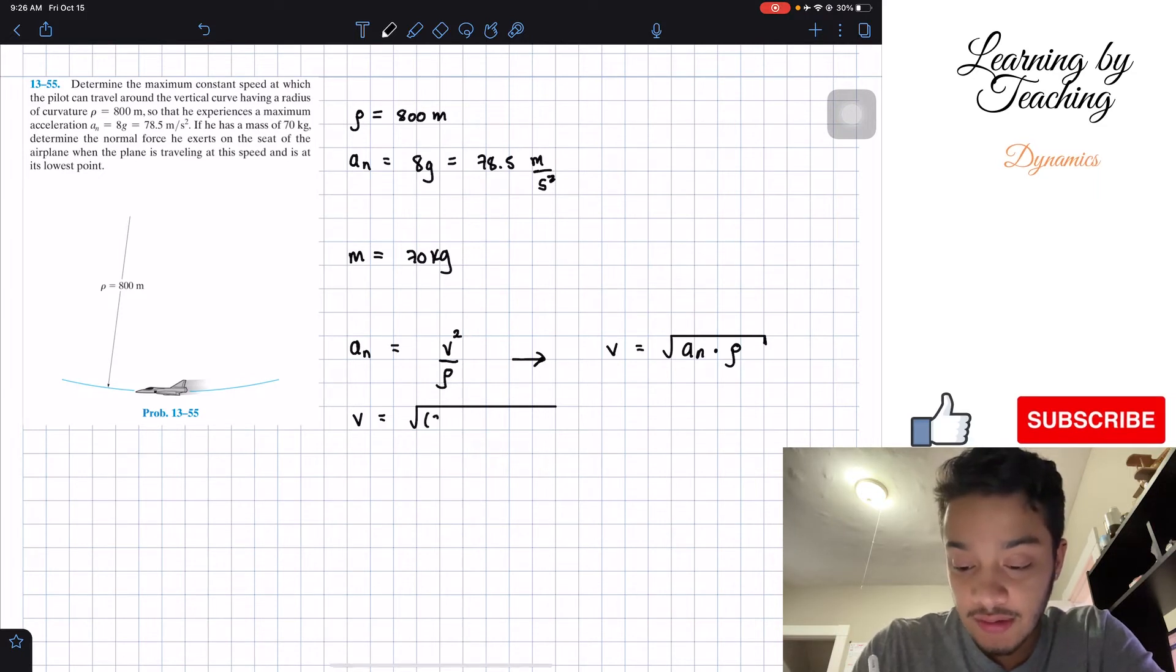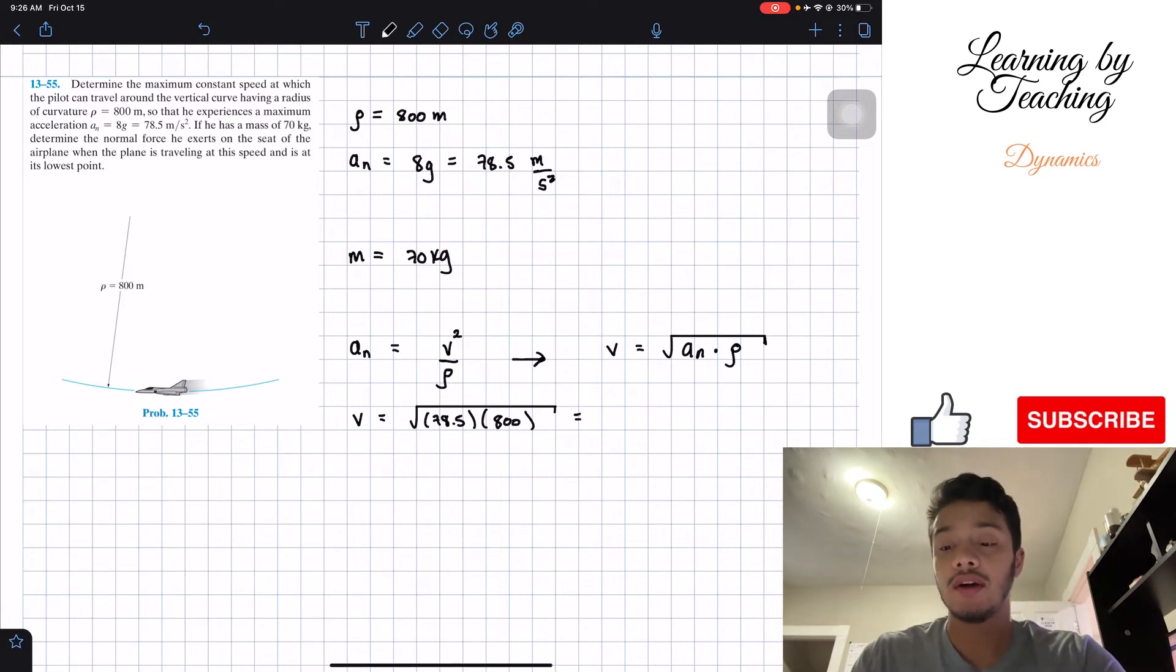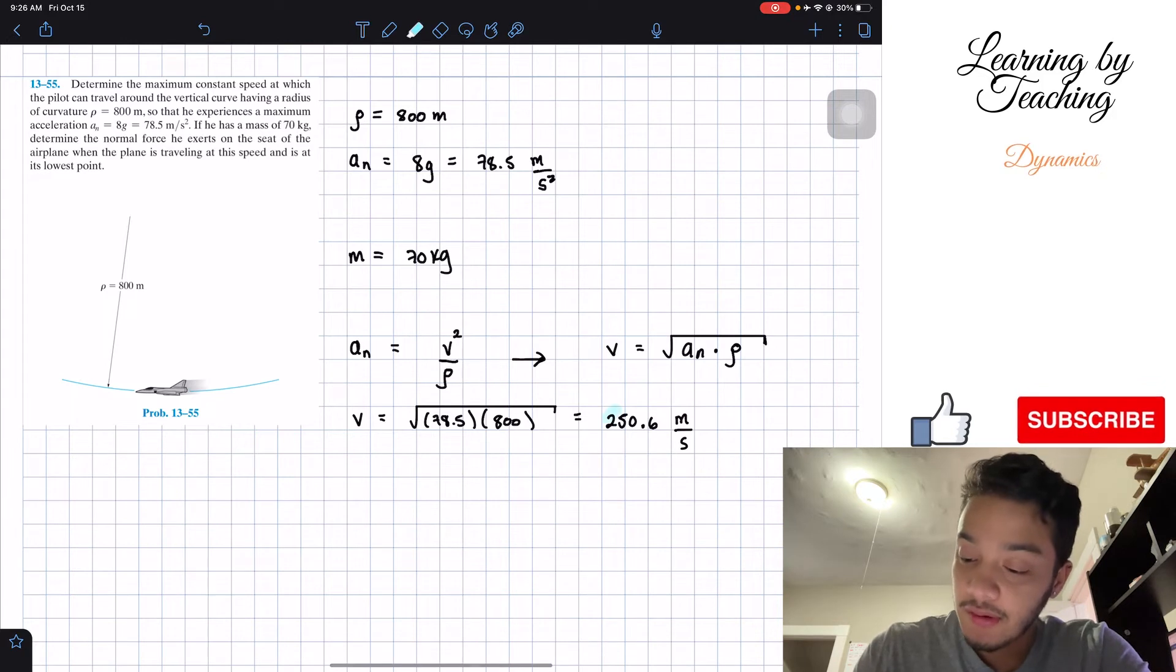Since we know the value for both the acceleration and the radius of curvature, we have the acceleration, which is 78.5, multiplied by my radius, which is 800 meters. And if we plug this into our calculator, we will find out that this is equal to 250.6 meters per second. And we just found out the first solution for this problem.